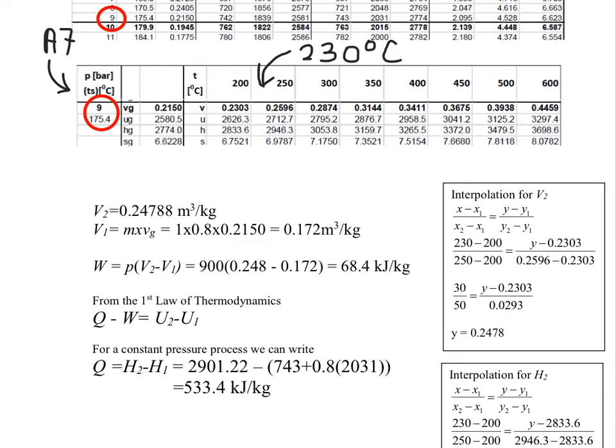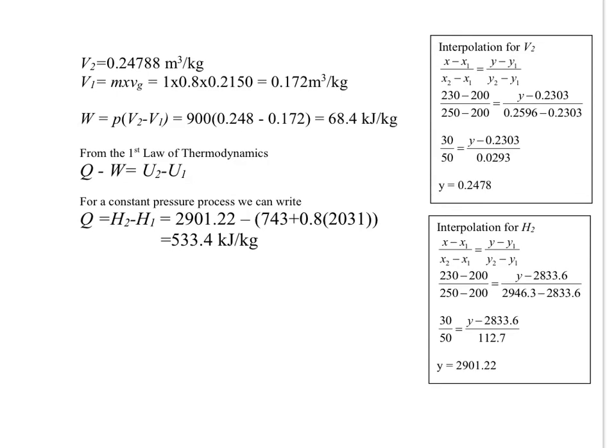We look for H at 250 and 200. We now go down. And we want to find the enthalpy at 230. We got the 200 value which is exactly the same. And by a quick calculation we get 2901.22. That's where we got the 2901.22 kilojoules per kilogram.